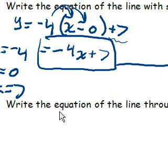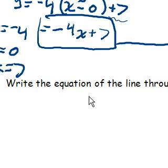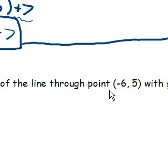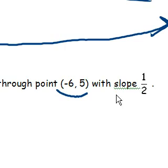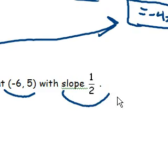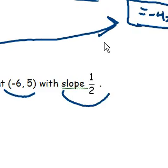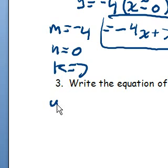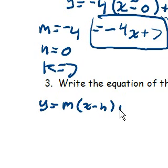Moving along to number three, we are almost done. How excited are you? Write the equation of the line that passes through the point, six negative five, that has a slope of one-half.